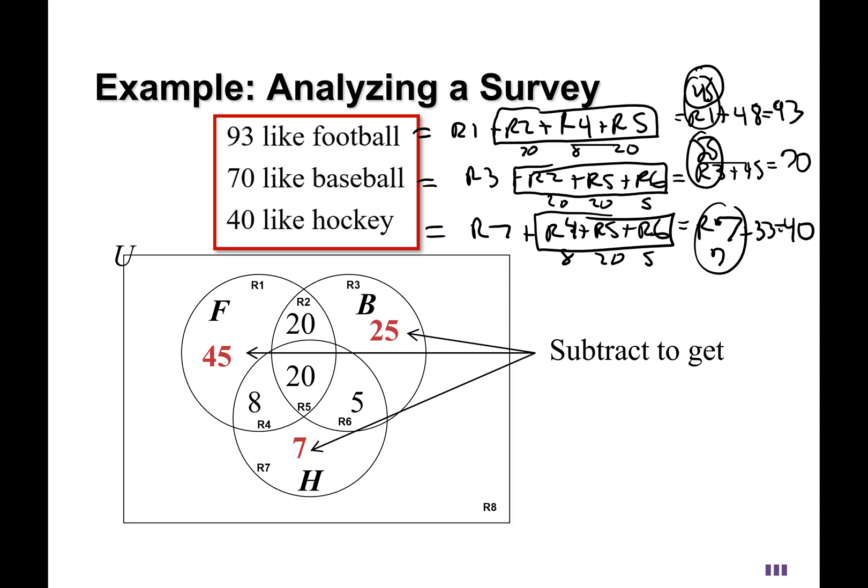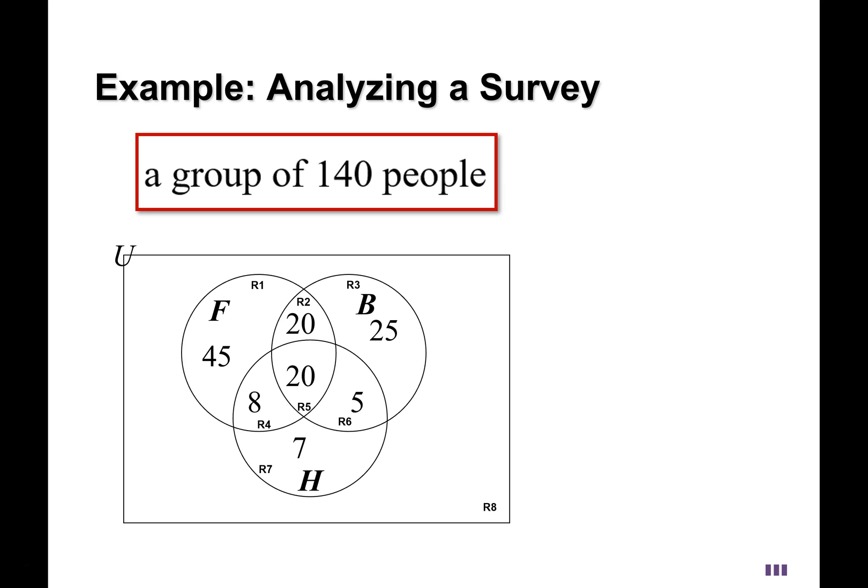We have filled out seven of the regions, but we can't forget the eighth. It's possible that there are people that were surveyed that didn't like any of these sports. And so I don't want you to get this confused with the universal set. That's why I like to put the universal set like off on the edge. The universal set is not the outside. The universal set is everything. And so when you go to that first line of the problem, they tell you there was a group of 140 people. And this is basically the universal set should add up to 140. So we don't put 140 on the outside. The universal set is everything. So we add up all these numbers. This is equal to region 1 through region 8. We know region 1 up to region 7.